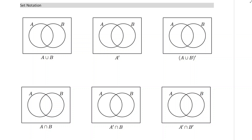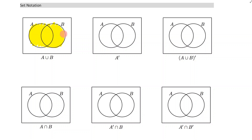It's important that we can visualize the symbols of our set notation, so let's go through that now. The first one we're going to deal with is A union B, and we know that that's just everything in A and everything in B and where they overlap as well, so that's what we're going to shade in there.